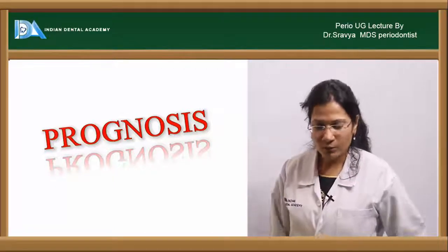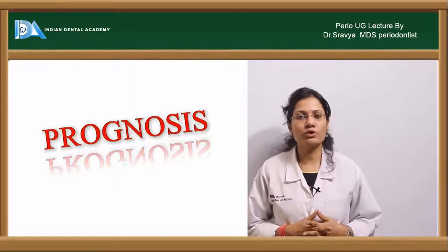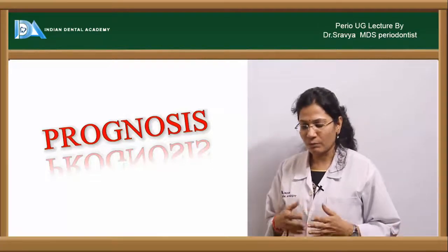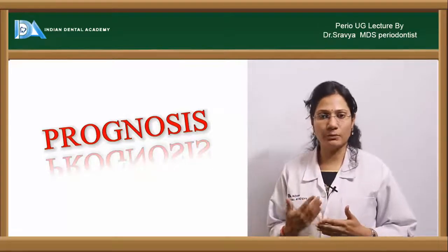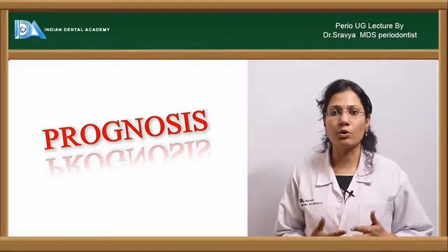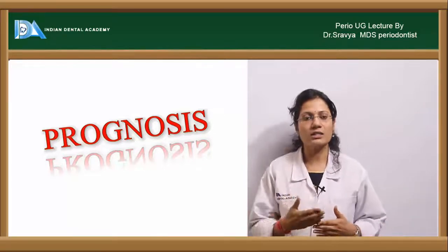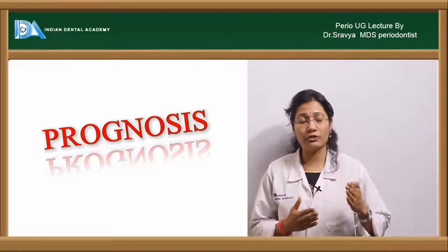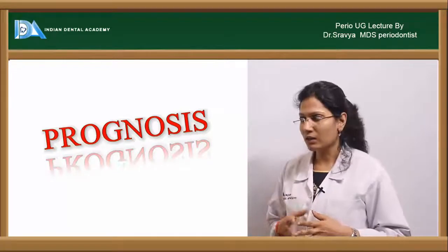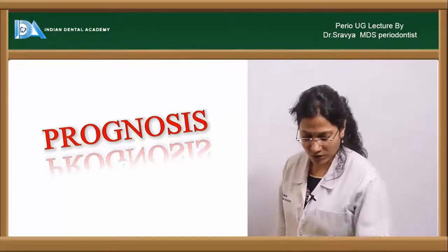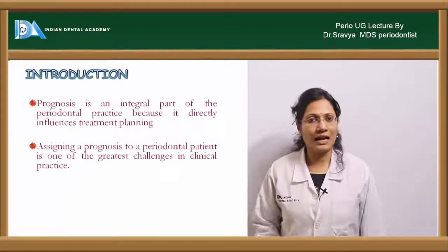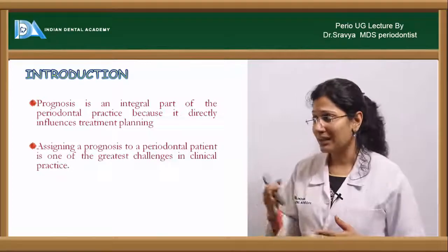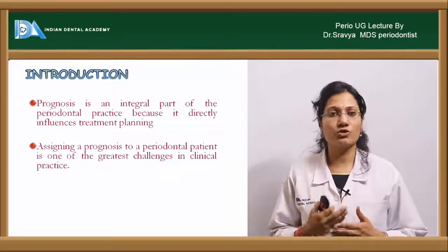The topic is prognosis. Prognosis is one of the important, integral parts of periodontal therapy. Before you can plan a treatment for the patient, you always need to determine the prognosis. The prognosis always fits in after diagnosis and before treatment planning. It is one of the integral parts of periodontal therapy and it influences your treatment planning, so your treatment planning will always go in relation with your prognosis.